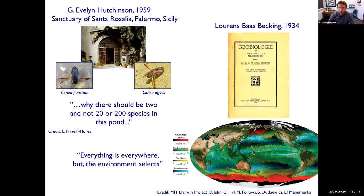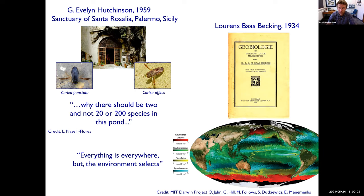There's also the Baas-Becking hypothesis, which many of us have probably heard about. It basically postulates that everything is everywhere but the environment selects. This is illustrated in a beautiful model simulation by the Darwin group at MIT, including Mick Follows, Stephanie Dutkiewicz, and collaborators. Here you see a global model where the different colors show the relative dominance of different kinds of microbes living in different parts of the oceans.